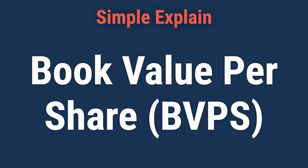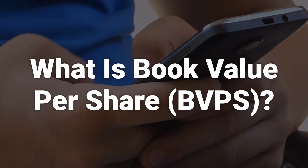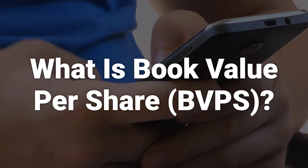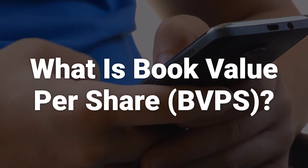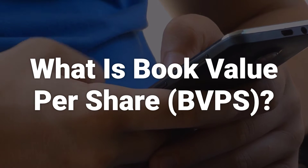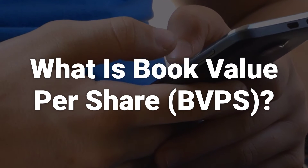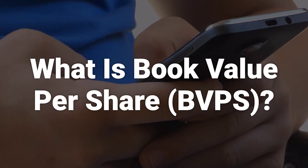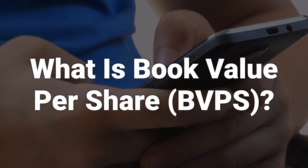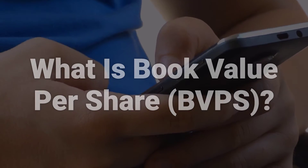Let's learn about book value per share, BVPS. Book value per share is the ratio of equity available to common shareholders divided by the number of outstanding shares. This figure represents the minimum value of a company's equity and measures the book value of a firm on a per share basis.